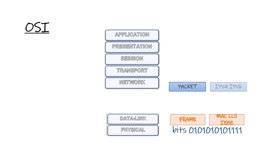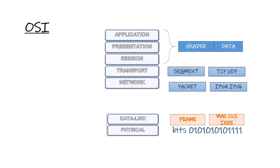In the network layer, we speak about packets — IPv4 and IPv6. If the packet is going out of the local area network to somewhere far away, that's where routers operate. The transport layer is basically how we send packets; the types of segments used here are TCP and UDP. The application, presentation, and session layers we won't focus on much in this series, as they're more relevant to programmers.